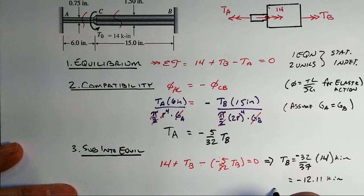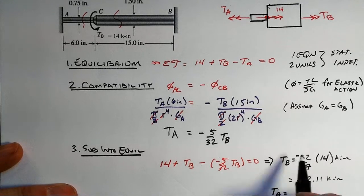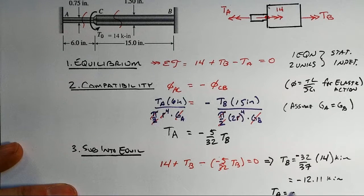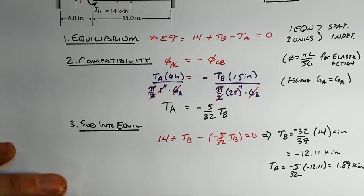And then that will tell us that TA, which was equal to minus 5 over 32 of our minus 12.108, and that will be a plus 1.89 kip inches.